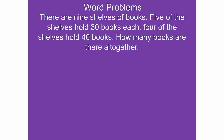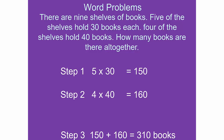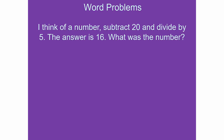There are 9 shelves in the library. 5 shelves hold 30 books each, and 4 shelves hold 40 books each. How many books are there altogether? Step 1: 5 times 30 is 150. Step 2: 4 times 40 is 160. Step 3: add them together — 150 plus 160 gives you 310 books total.